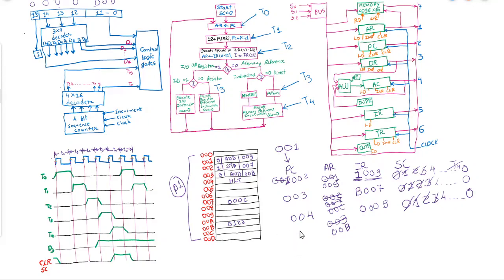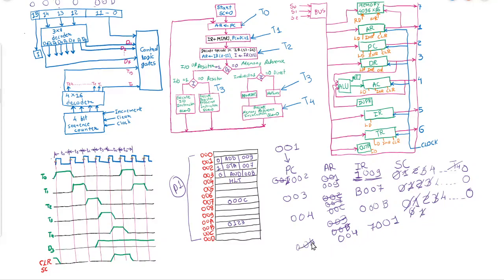The last instruction is at address 004. PC to AR: the new content of AR will be 004. Then IR = M[AR], so in IR we will have 7001. T0 is done and T1 is done. We need to increment the program counter; the new value of the program counter will be 005.